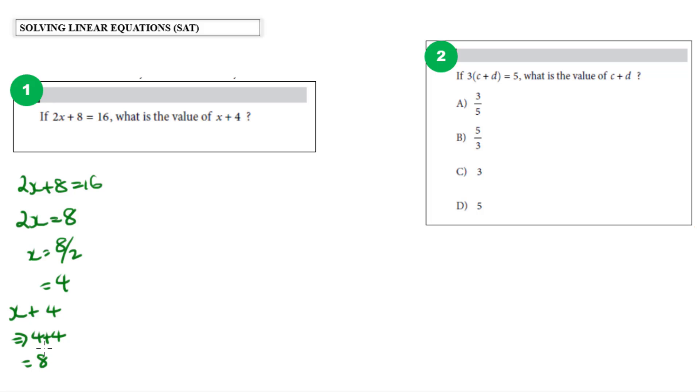But what if we were to think about it this way instead? If 2x plus 8 is equal to 16, we can compare it to x plus 4. Notice that 2x plus 8 is just basically 2 times x plus 4, because 2 times x would be 2x, 2 times 4 would be 8.